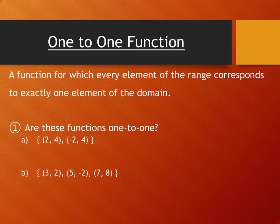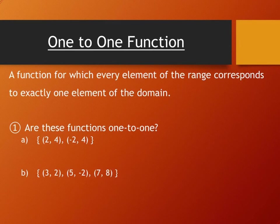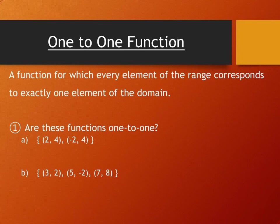A function is one-to-one when every element of the range corresponds to exactly one element of the domain. In a regular function, every element of the domain corresponds to exactly one element in the range, but in a one-to-one function, you reverse the domain and the range, and the same has to be true as well. Every element of the domain has exactly one element in the range, and every element in the range has exactly one element from the domain — there's a one-to-one correspondence between the domain and range values.